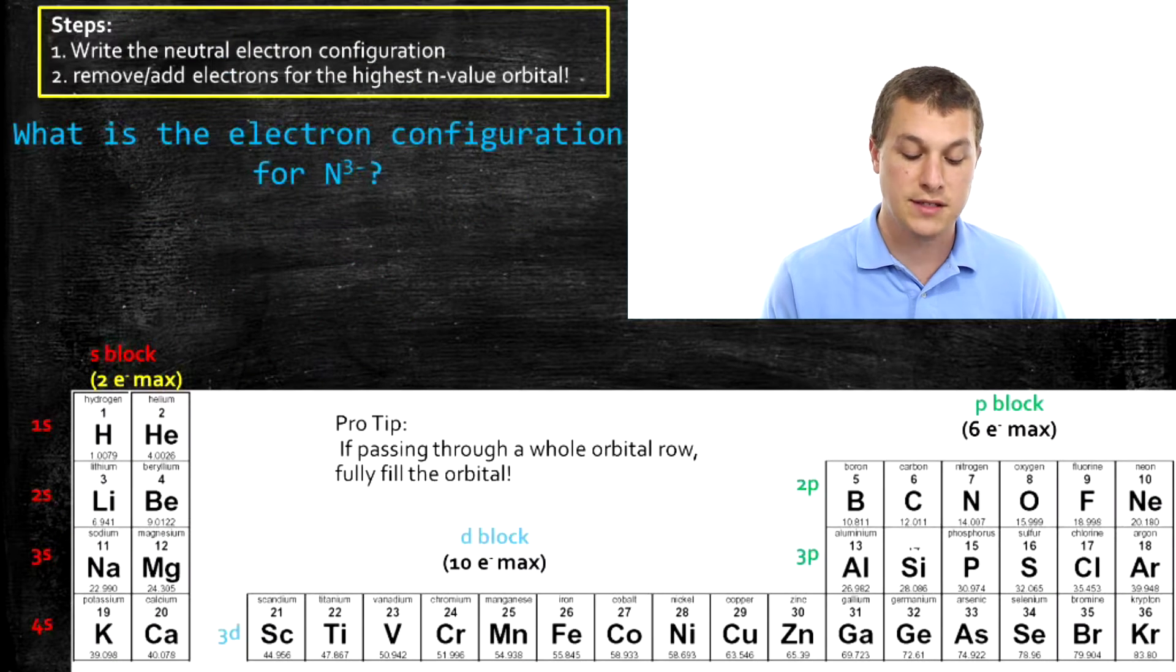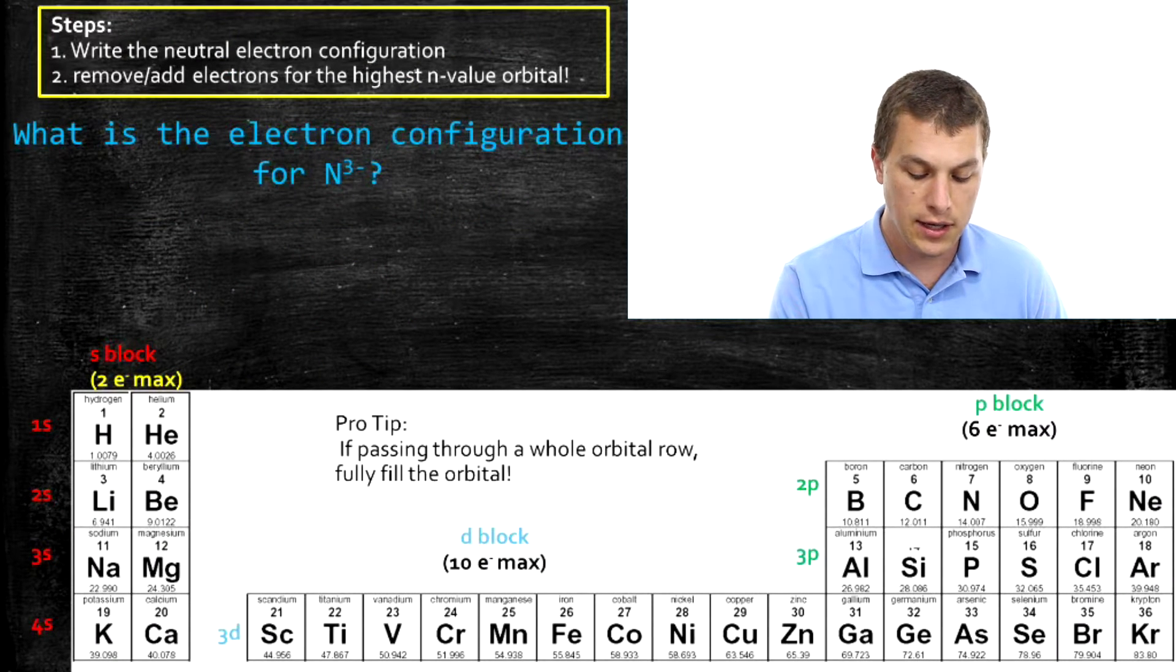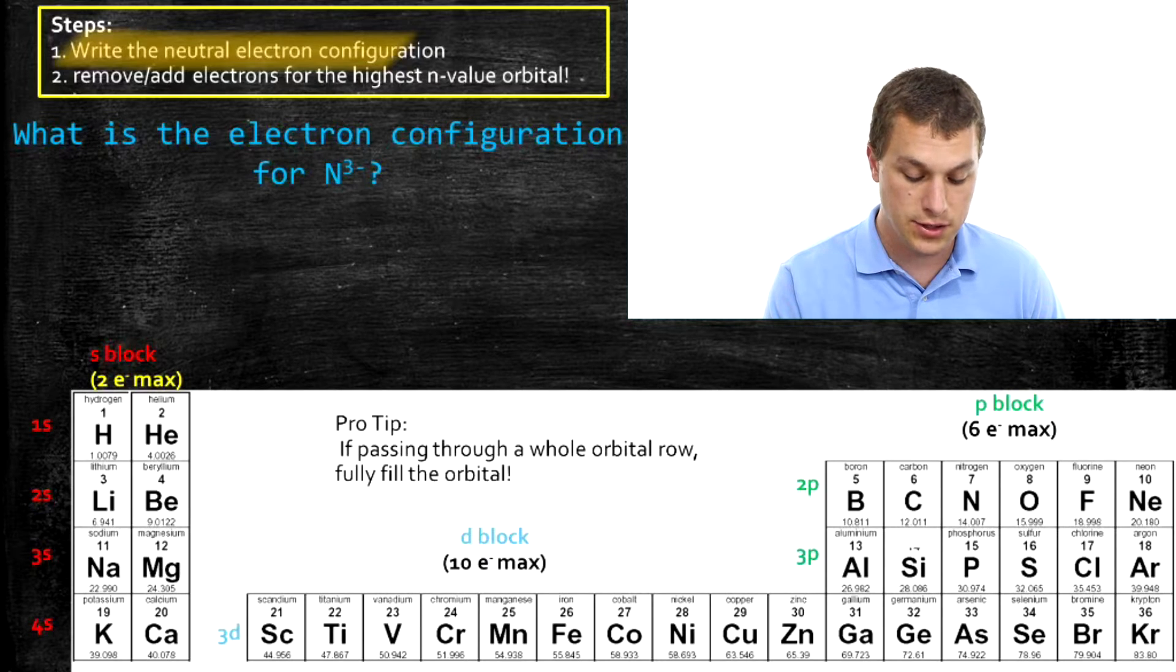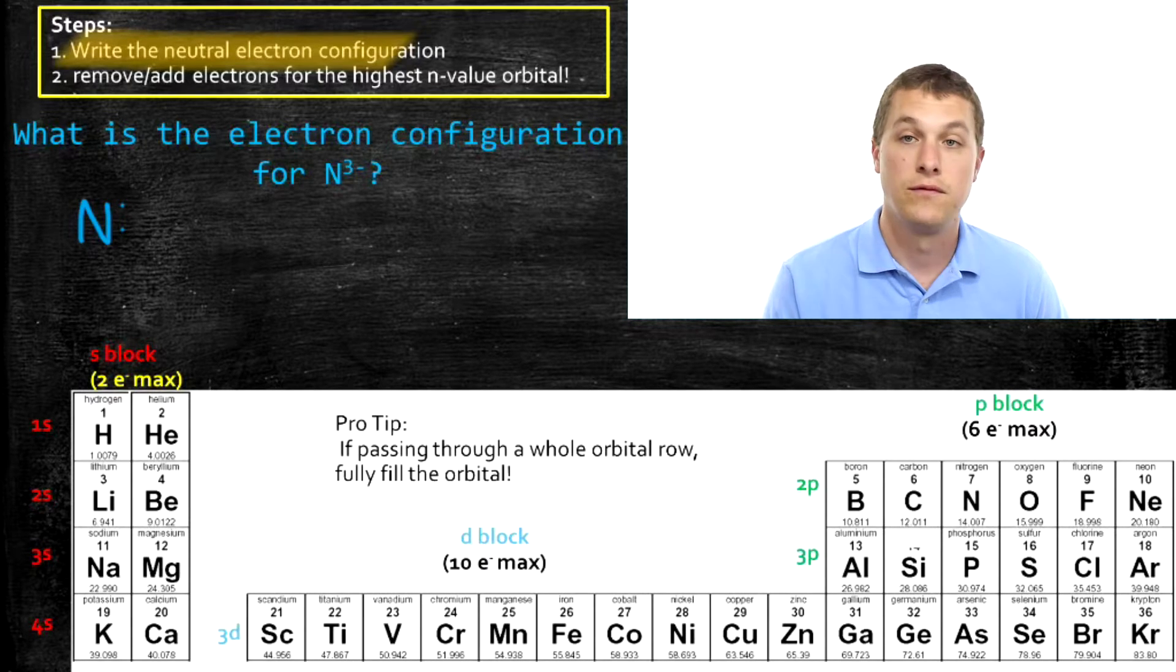Well, I've broken the process down into two steps. The very first thing we do is we just write the electron configuration for the neutral species. So write the neutral electron configuration. And then we're going to adjust that for the ion.